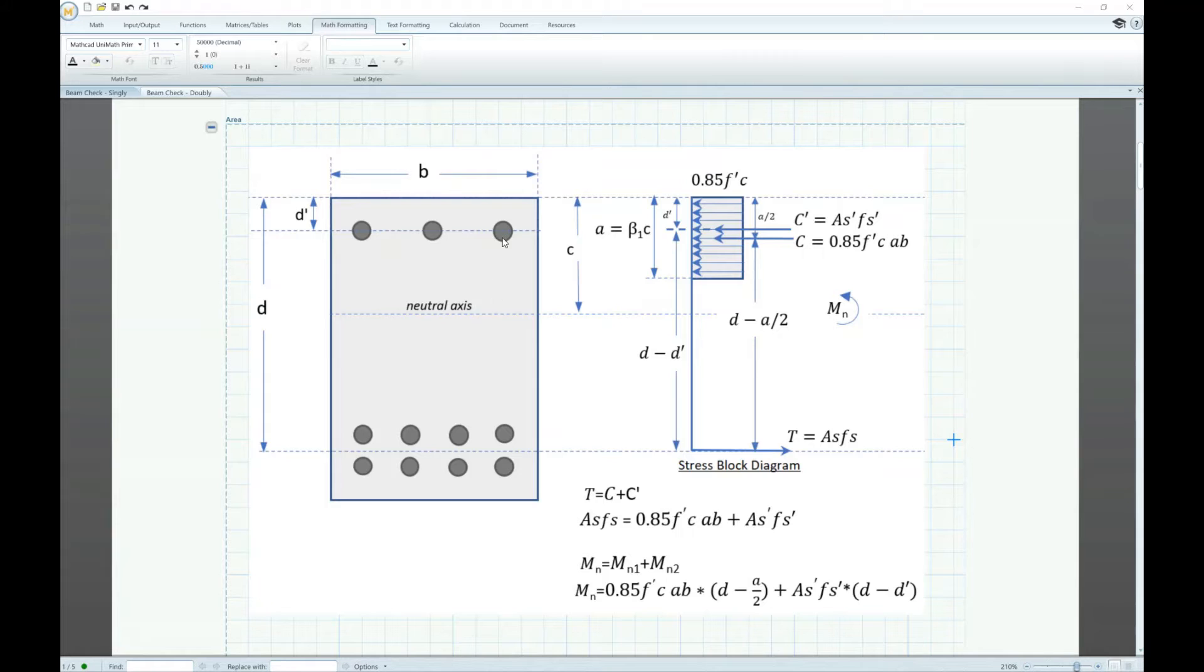When additional rebars are added at top section we introduce an additional compression force C prime which is equal to As prime times fs prime. As prime is the area of reinforcement at top section and fs prime is the tensile stress at top section. C prime is located at d prime which is the depth of your top reinforcement and C prime to T is at distance d minus d prime. When we add reinforcement at top we also must add equivalent reinforcement at the bottom. This is to ensure equilibrium of forces because summation of all forces must be equal to zero, therefore T must be equal to C plus C prime.